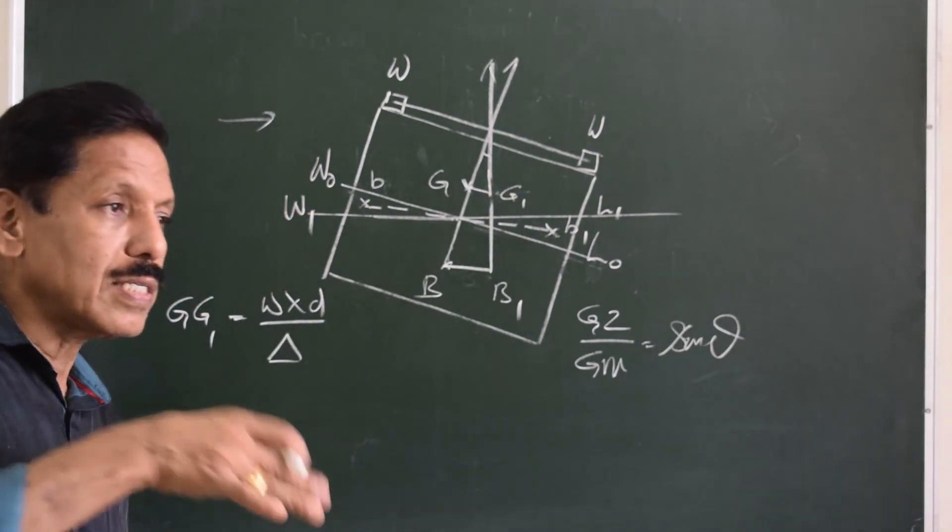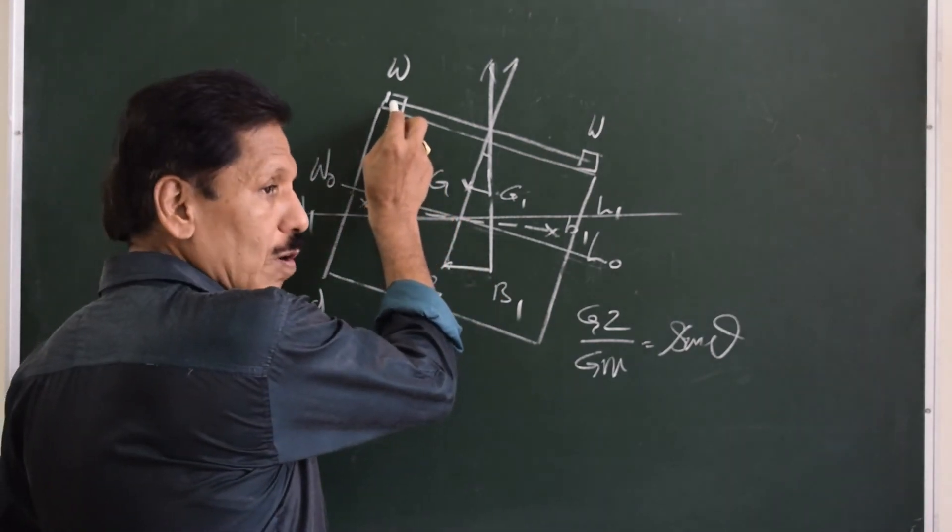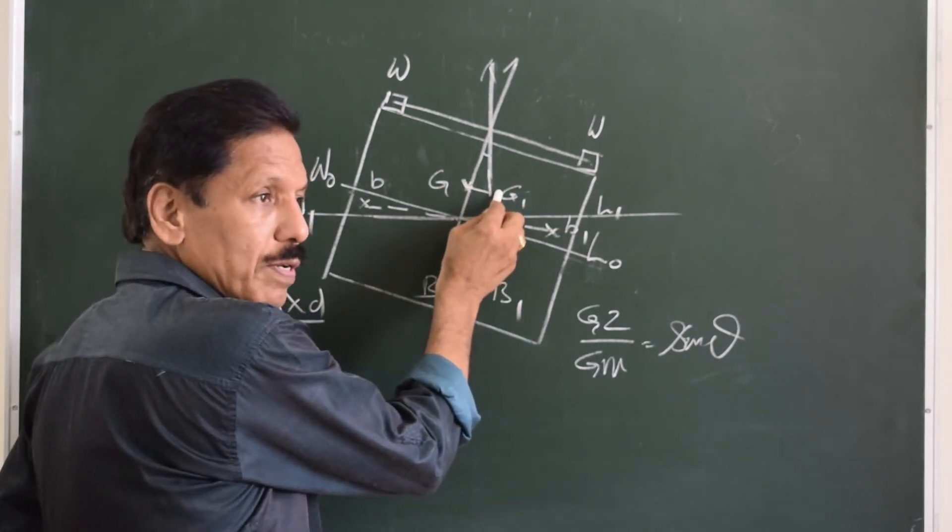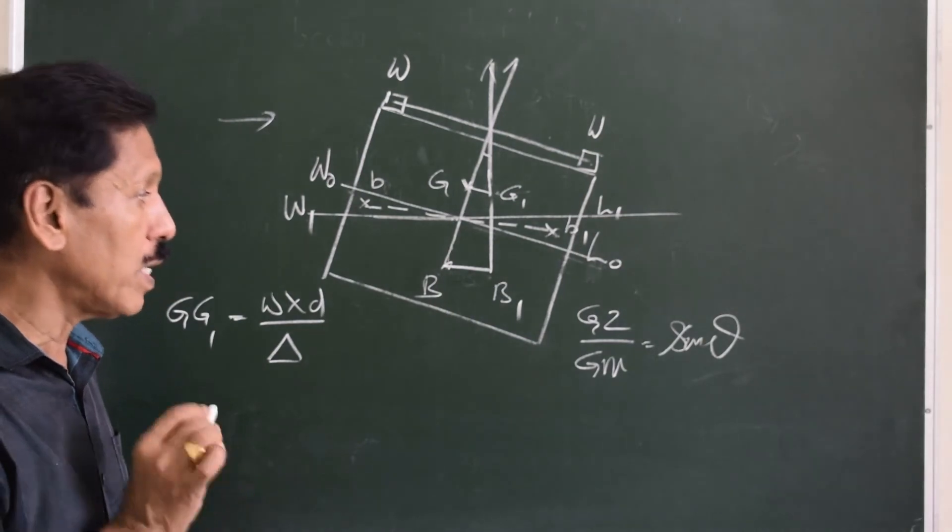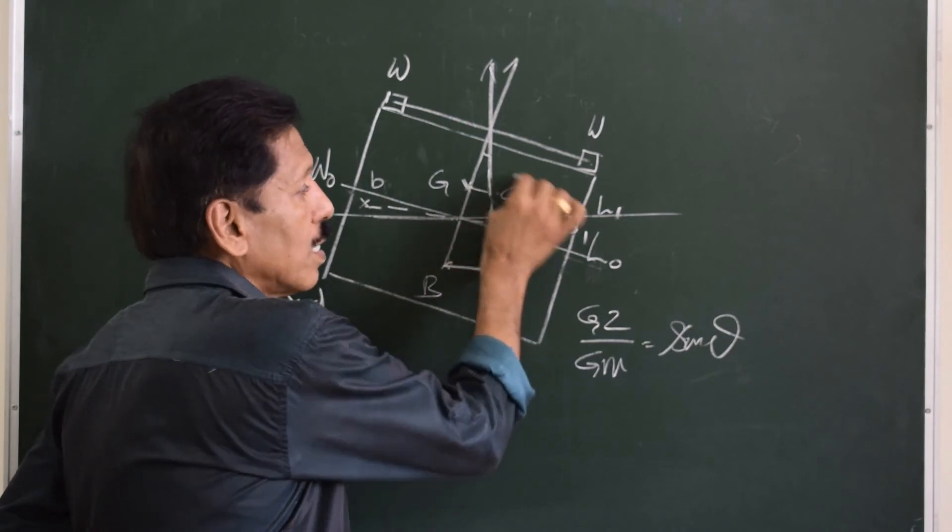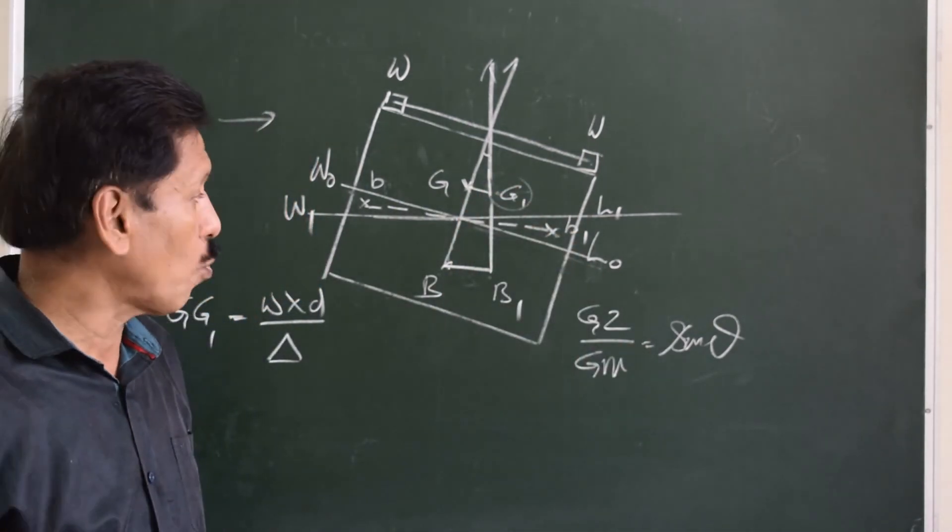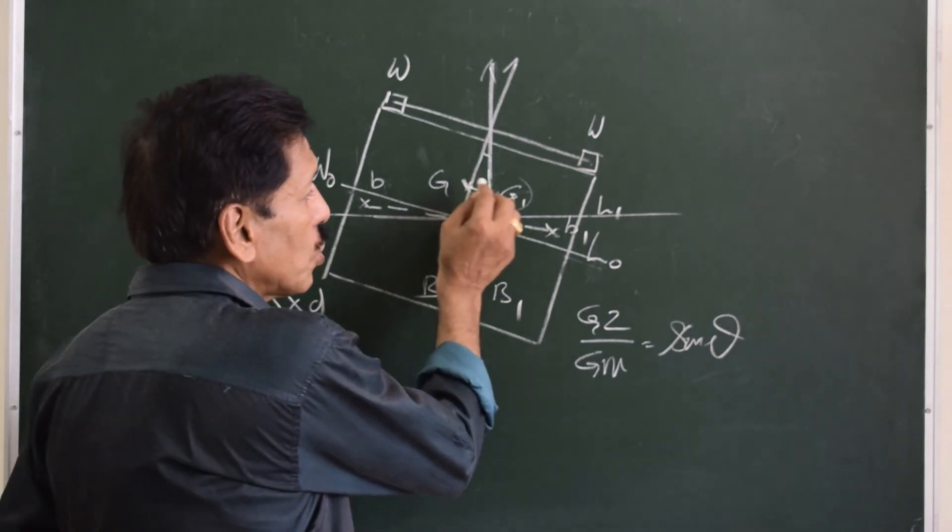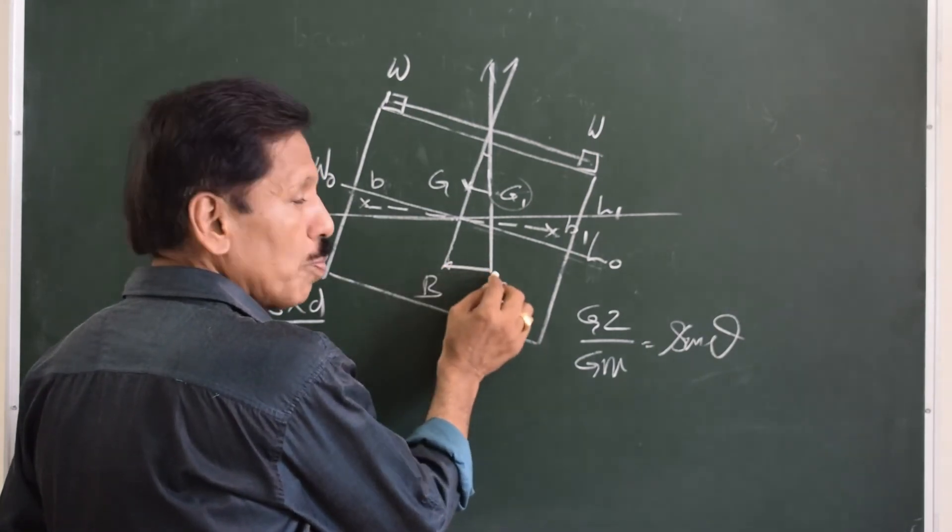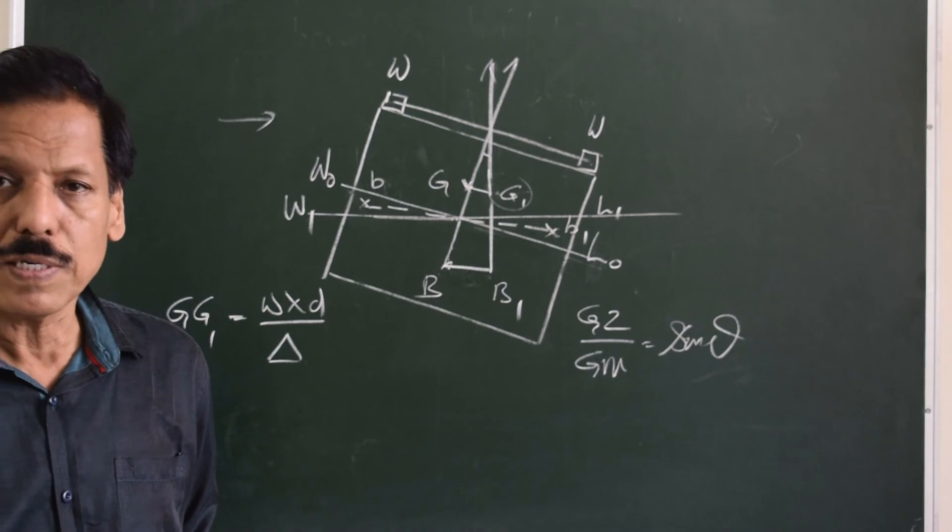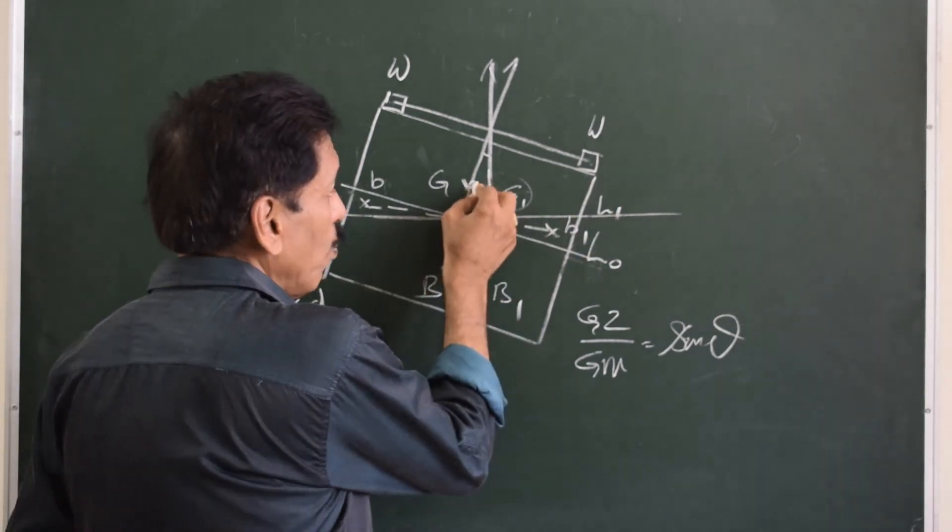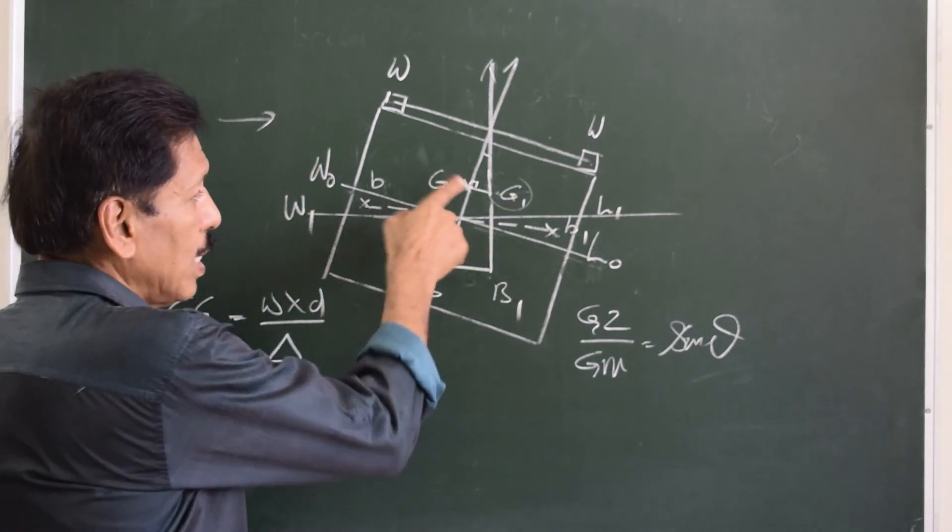Actually, it is the other way around. The correct sequence is: W is shifted here, because of that G is shifted here to G1, because the new center of buoyancy must come under the new center of gravity to achieve equilibrium. So you have seen that G has shifted to G1 parallel to the shift of the weight, and B has shifted to B1 to come vertically under the G1. This is the list diagram. In the list diagram, compared to the last diagram where Z was 90 degrees, in this diagram G is 90 degrees.